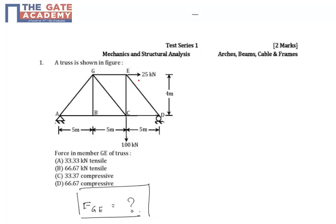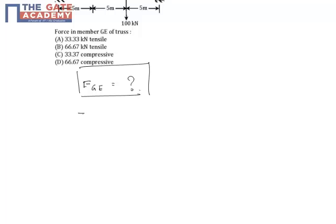As we know from the basic things, if I take summation of Fx equals 0, that is in horizontal direction, HA can be written as 25 kilonewton.